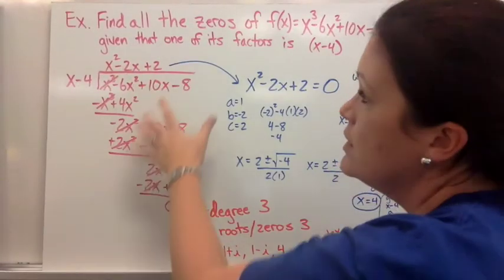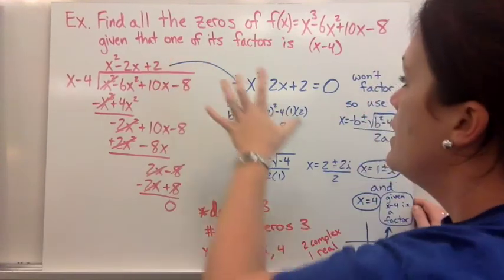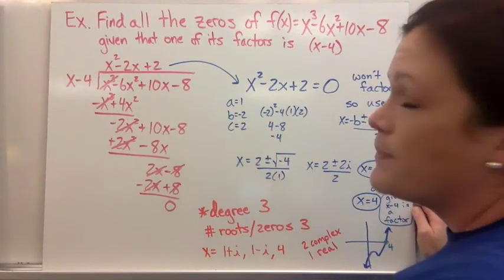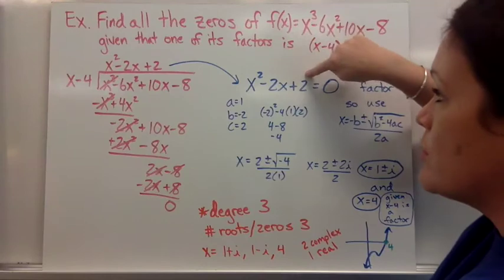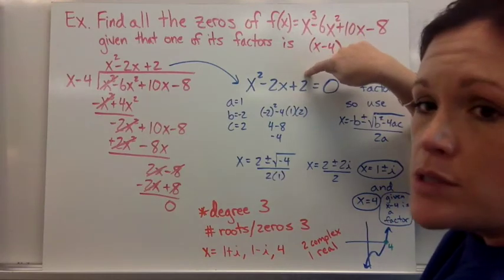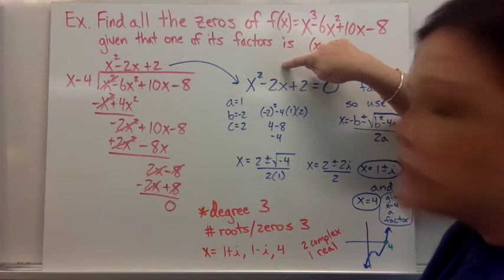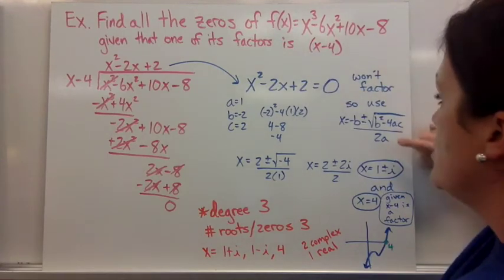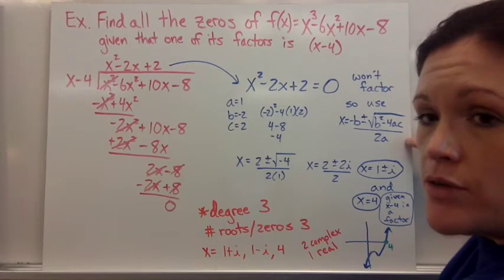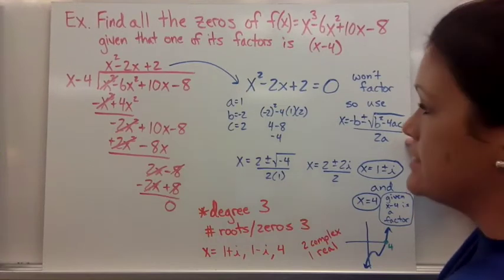So you reduced it using long division. You take your quadratic form, and you see, can I factor this? So there is no set of numbers that will multiply to give you 2 and add up to be -2. So I put that. It won't factor. So we would have to use the quadratic formula. So I wrote that here in case you want to add it to this example.